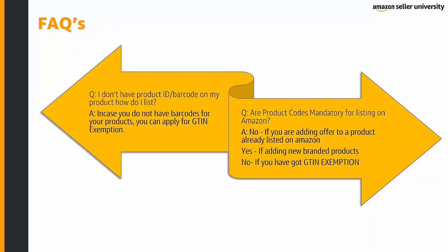Some frequently asked questions about barcodes: If you don't have a product ID or barcode on your product, you can apply for GTIN exemption. Are product codes mandatory for listing on Amazon? No, if you are adding an offer to a product already listed on Amazon. Yes, if adding new branded products. No, if you have obtained GTIN exemption.